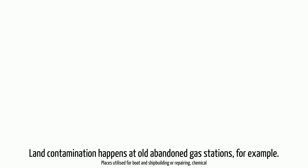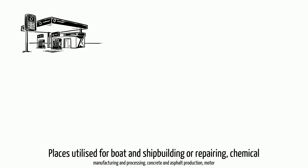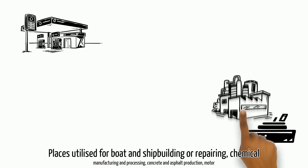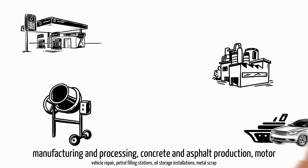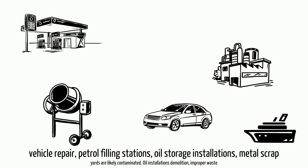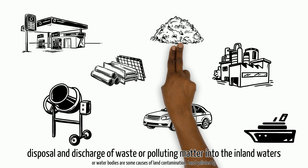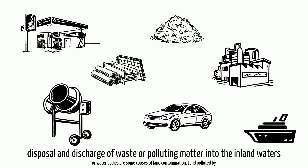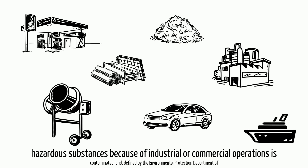Land contamination happens at old abandoned gas stations, for example. Places utilized for boat and shipbuilding or repairing, chemical manufacturing and processing, concrete and asphalt production, motor vehicle repair, petrol filling stations, oil storage installations, and metal scrapyards are likely contaminated. Oil installations demolition, improper waste disposal, and discharge of waste or polluting matter into inland waters or water bodies are some causes of land contamination.